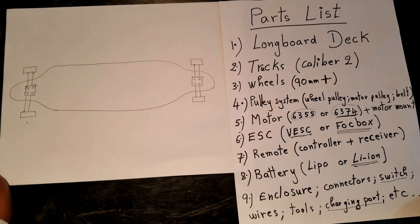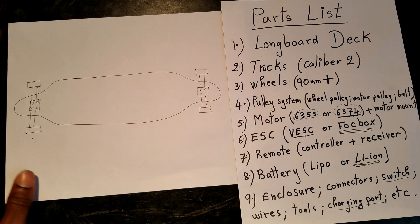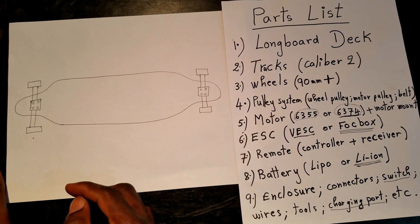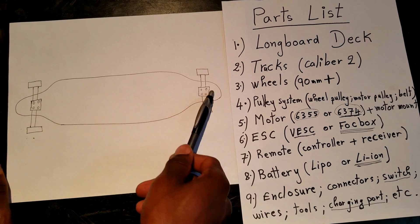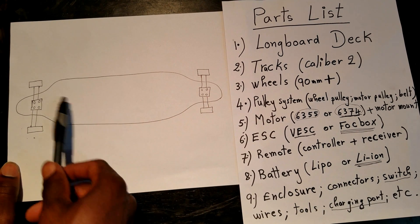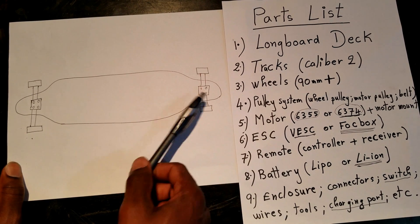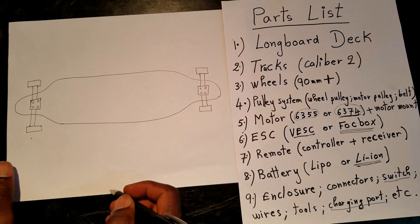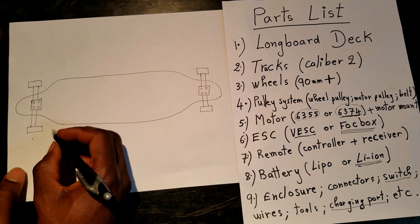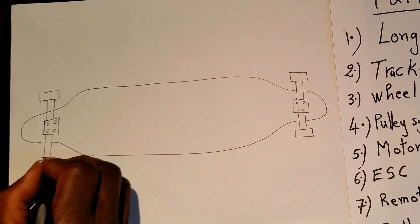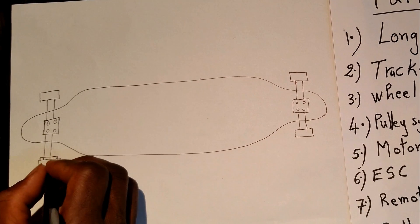I'm going to do a quick overview of how things would go on the board. You have your regular longboard. Now you have the trucks mounted with your wheels. Now you need to mount the pulley system. You have the motor pulley that goes on the motor. You have the wheel pulley that goes on the wheel this way.